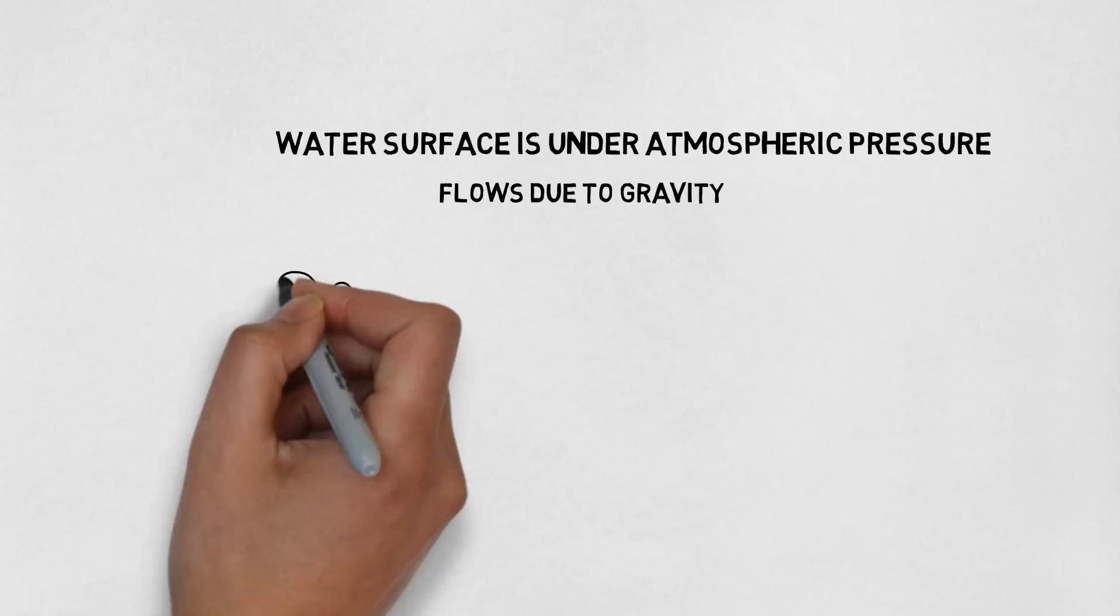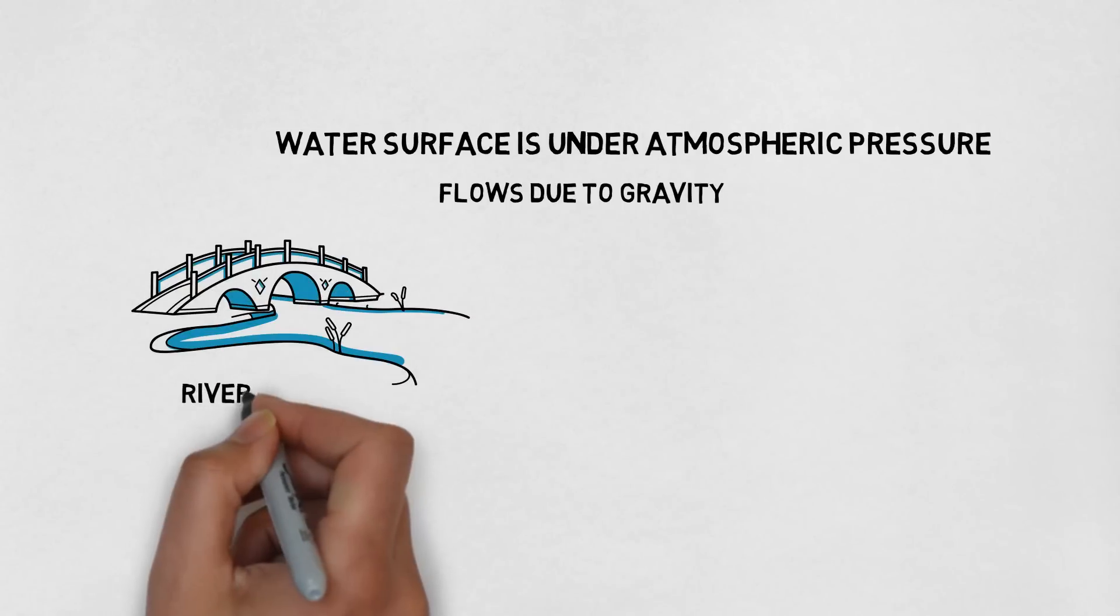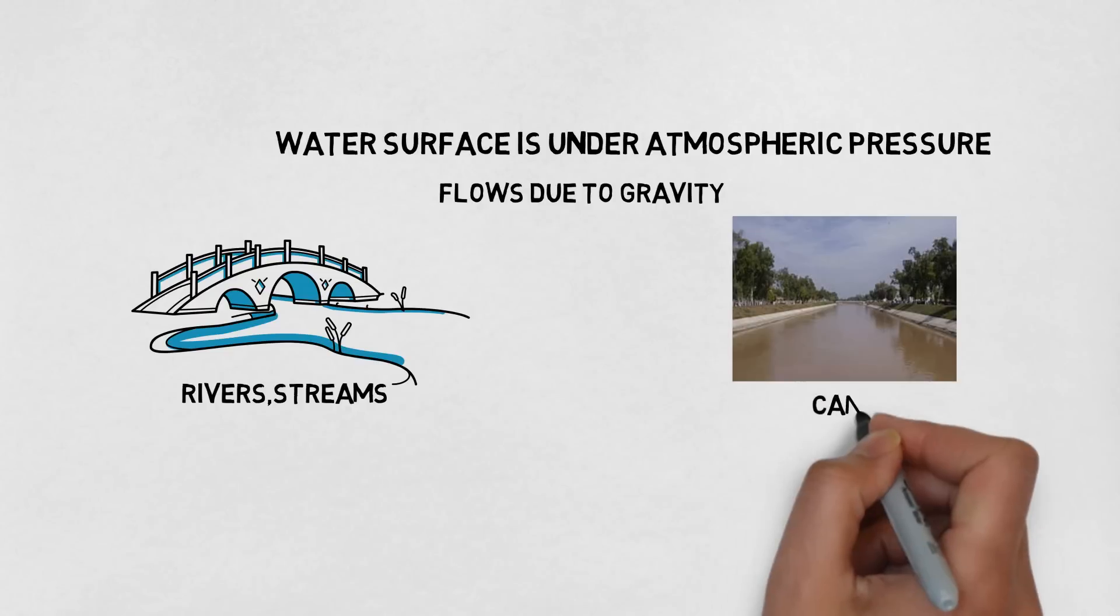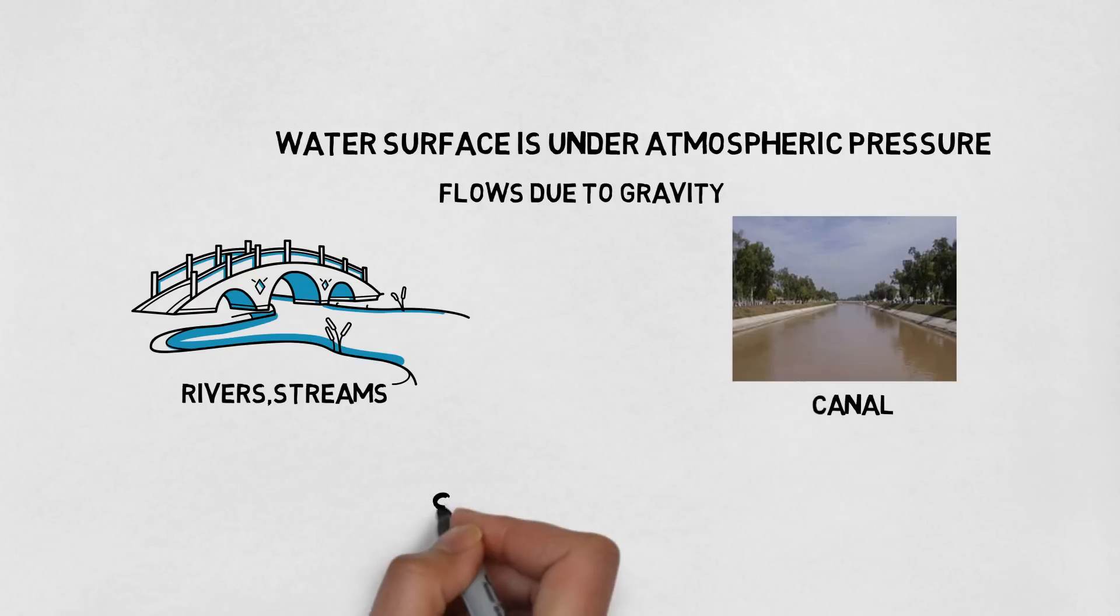The most common examples of this open channel flow are rivers, streams, and also the man-made canals. All these open channel flows possess some certain amount of energy, also called as specific energy.